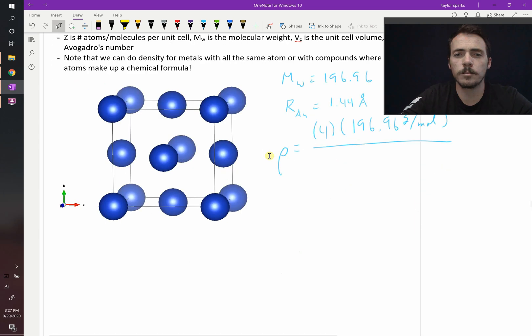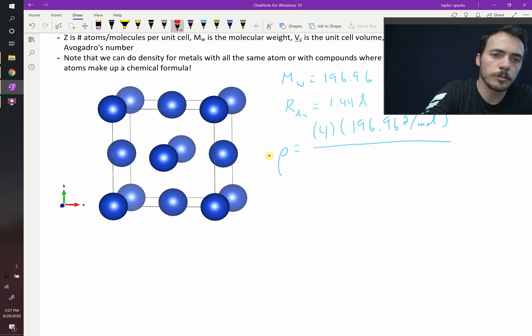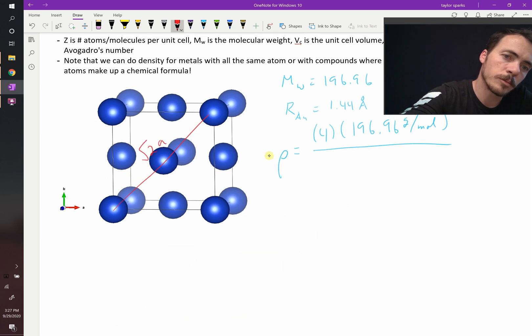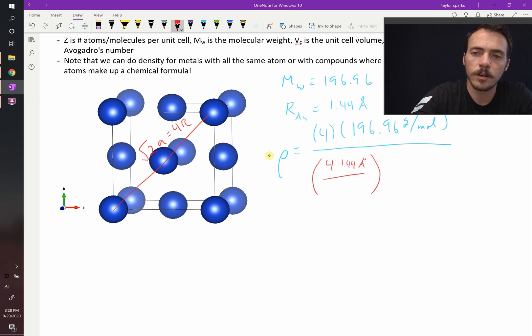The volume is going to be equal to the lattice parameter, cubed. What's the lattice parameter equal to? Well, we know that the lattice parameter, that this is square root of two times the lattice parameter, and it's equal to four of our radii. So the lattice parameter itself is going to be equal to four times the radii, times 1.44 angstroms, divided by root two, and we're going to cube that.